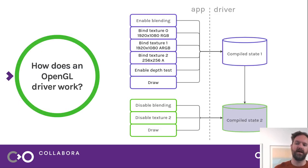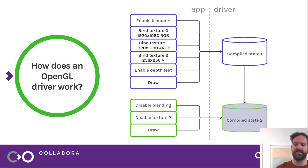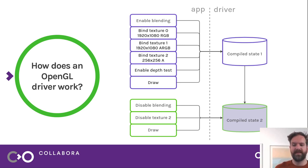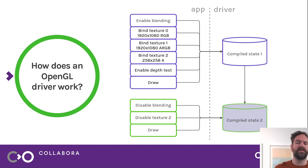For example, the application has three textures it wants to use within a draw, with blending enabled for transparency and a depth buffer. Every frame it tells GL: enable blending, bind texture to unit 0, bind texture to unit 1, bind texture 2, enable depth, and draw. For the second draw, it doesn't want blending, so it disables blending, disables the second texture unit, and draws again. This happens every single frame. OpenGL has no kind of persistent memory — you have to tell it over and over exactly what you want to do, and it ends up being very verbose.